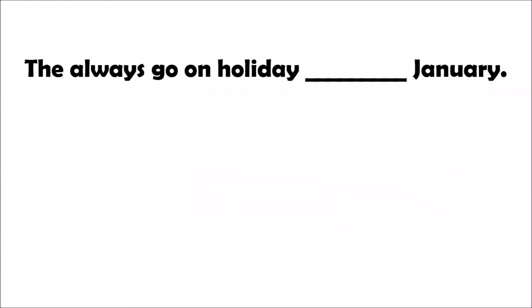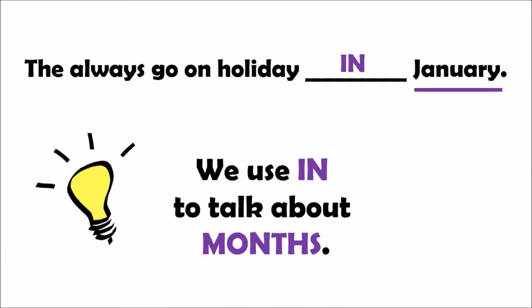What about this sentence: they always go on holiday in January. In, on, or at? We are going to use 'in.' They always go on holiday in January. We use 'in' to talk about months — the months of the year: January, March, August, November. They are months and we use 'in.'